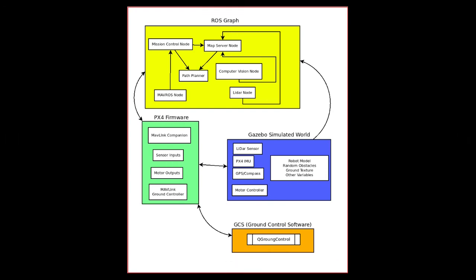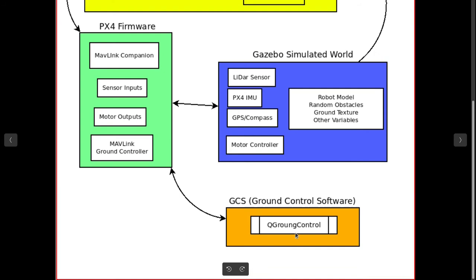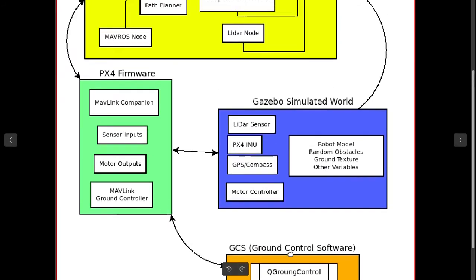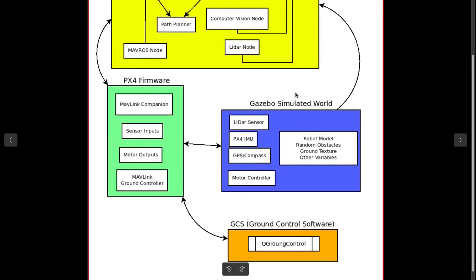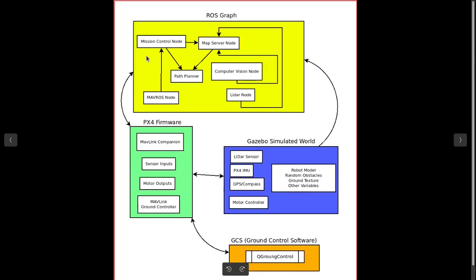ROS is a Robot Operating System. PX4 is the autopilot firmware that takes data from sensors and controls all the motors. Ground control software is the software we use to control our drones, and this setup is just for the simulation.